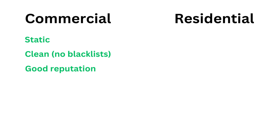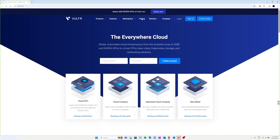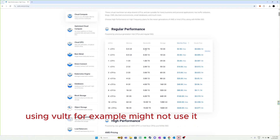There are two variants of IP addresses relevant here: commercial IPs and residential IPs. Commercial IPs are typically static, clean — not on any blacklists — and already have a high existing reputation, which matters when your business wants to send emails. Residential IPs are shared by multiple users, with no guarantee the next one will be clean. You could get a dirty IP address — or many — with no control over that.